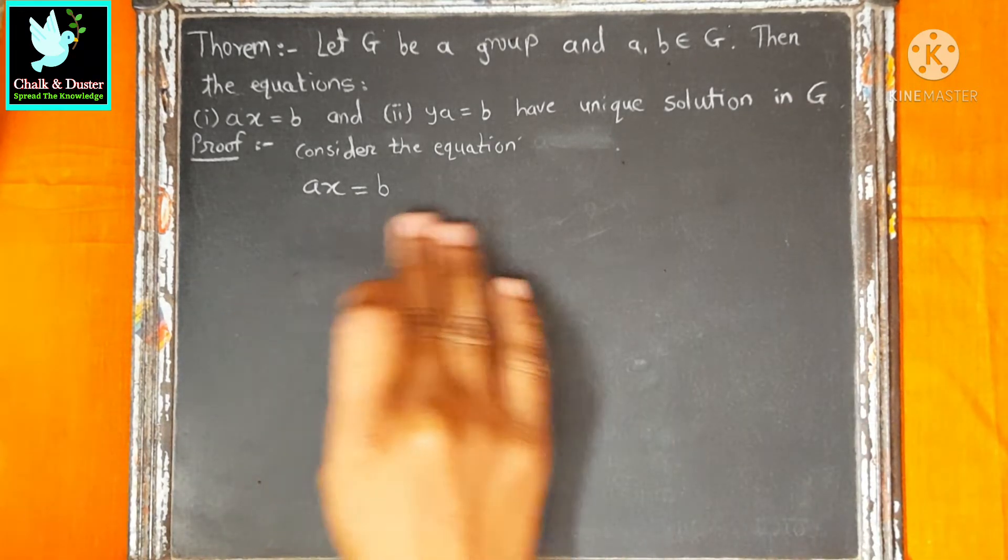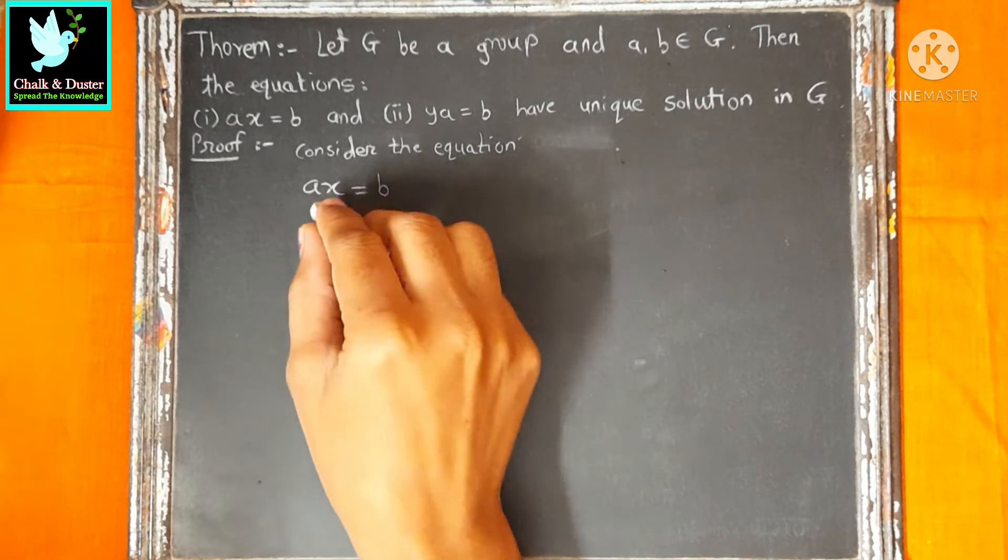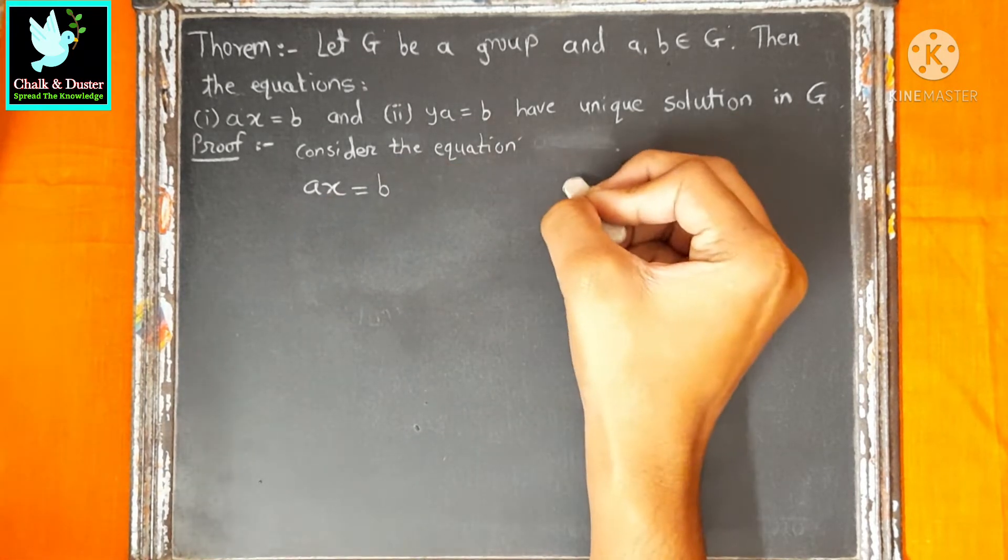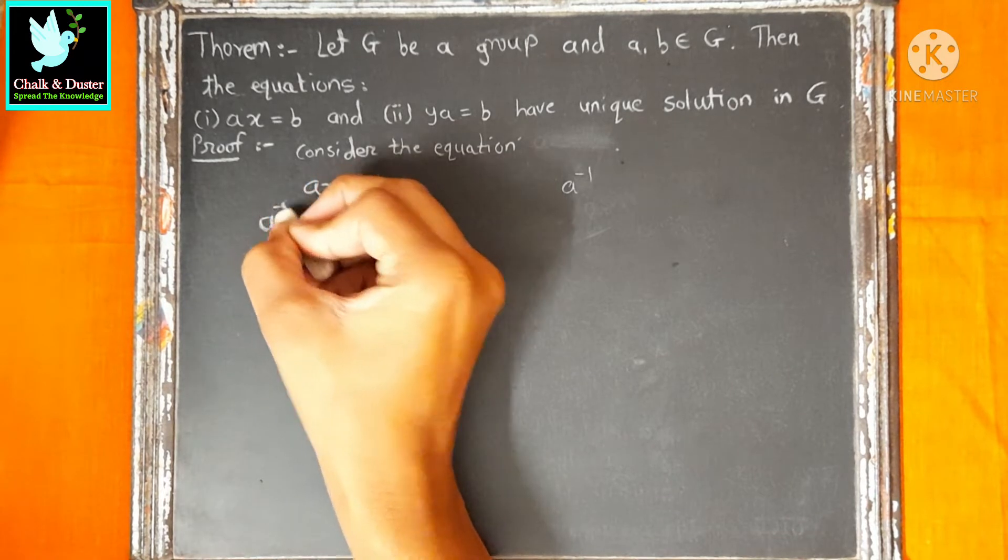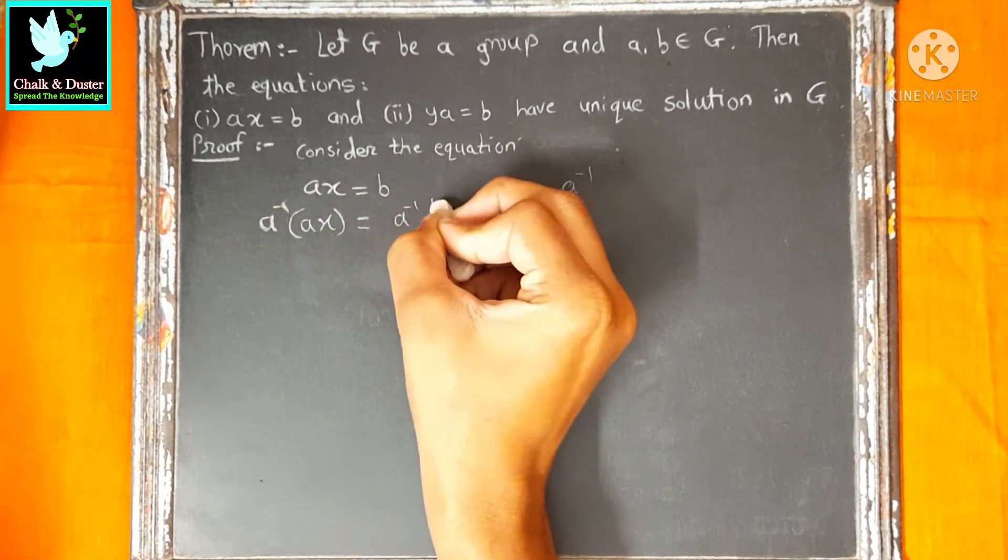First, we will find the solution. Let us start. Both sides pre-multiply by A inverse. X equal to A inverse B.